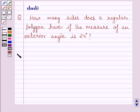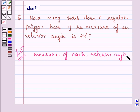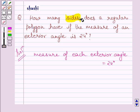Let us now start with the solution. The measure of each exterior angle of a regular polygon is 24 degrees. So we can write measure of each exterior angle is equal to 24 degrees, and we have to find the number of sides a regular polygon has.